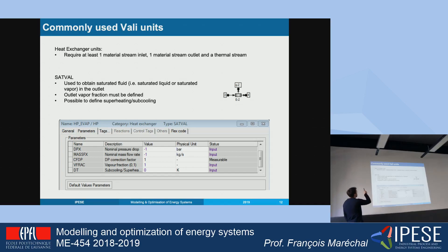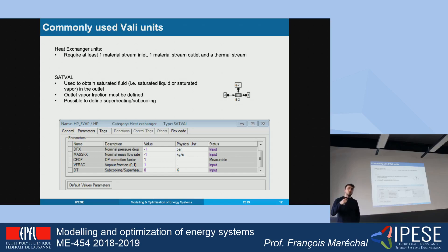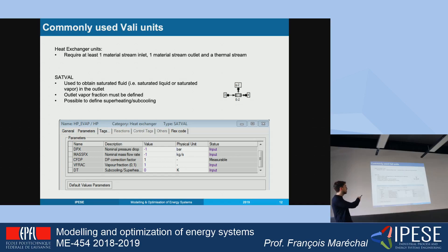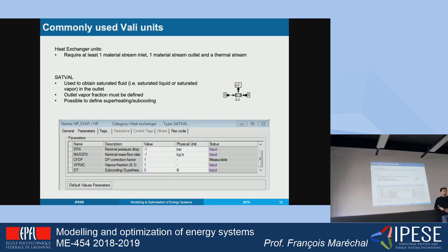For each unit, like a heat exchanger, you always need to define at least one inlet stream. There are different kinds of streams: material streams, which have a thermal associated to them; mechanical streams, needed for turbines or compressors; and heat streams, needed for heat exchangers. When you define a heat exchanger you need an inlet material stream, an outlet material stream, and Q — a heat stream.